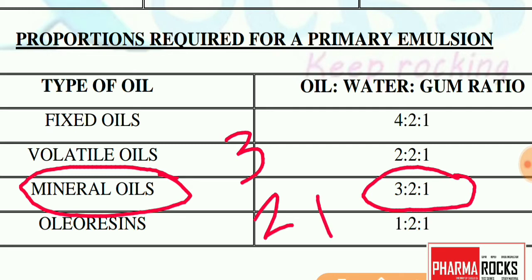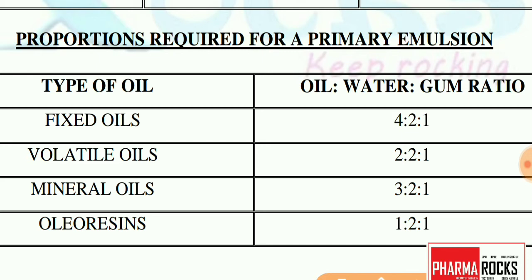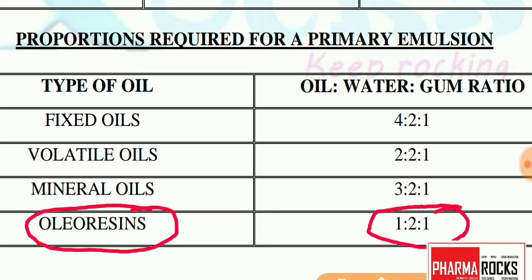For oleoresins, the oil:water:gum ratio is 1:2:1. That means if you take one part of gum, you take double — two parts of water — and half — one part of oil. So the oil and the emulsifying agent (gum) are in equal ratio, but water is double.